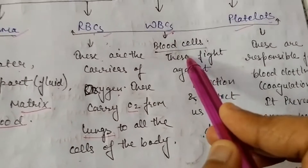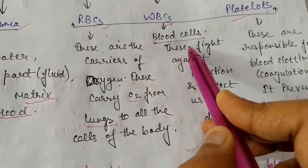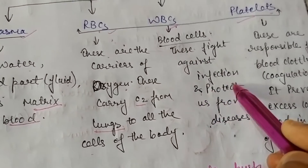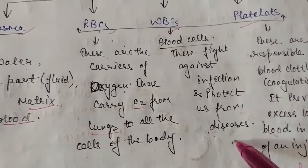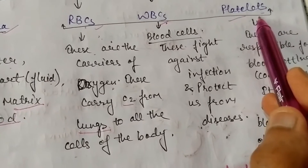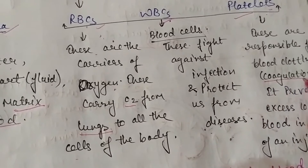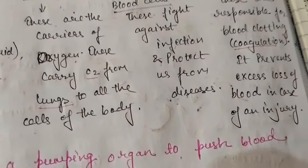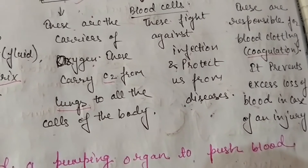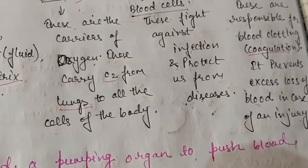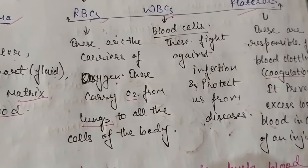WBCs are white blood cells because there is no hemoglobin present. These fight against infection and protect us from diseases. Then, platelets — these are responsible for blood clotting, also known as coagulation. Platelets are the cells responsible for blood clotting or blood coagulation, which prevents excess loss of blood in case of an injury.